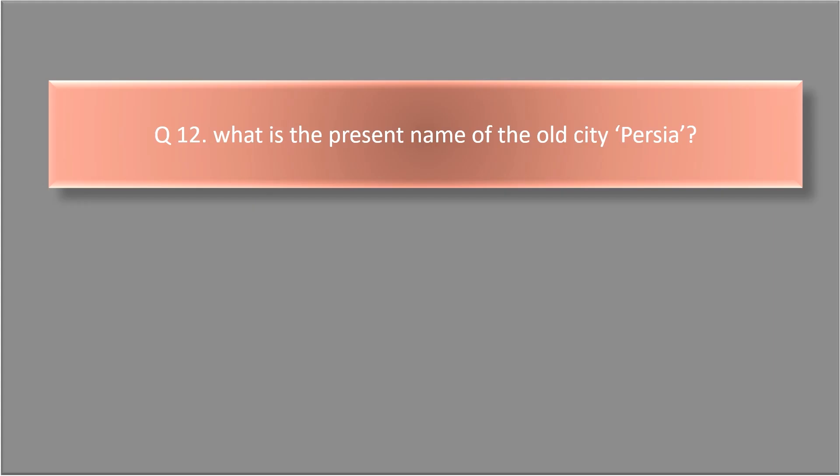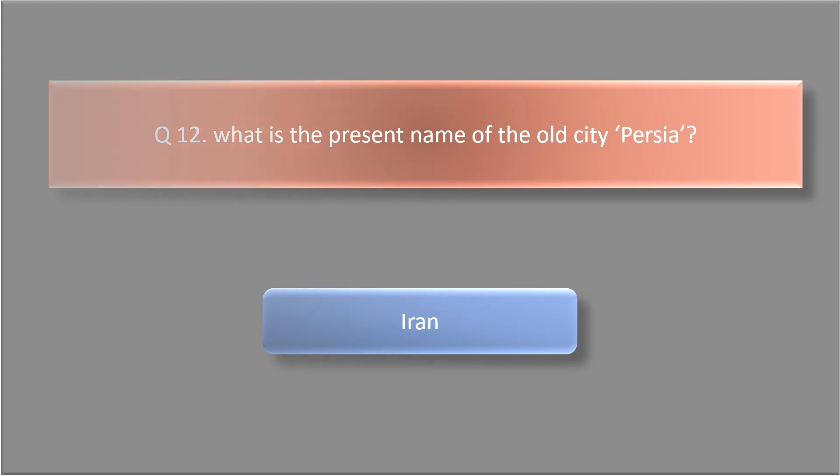What is the present name of the old city Persia? The answer is Iran.